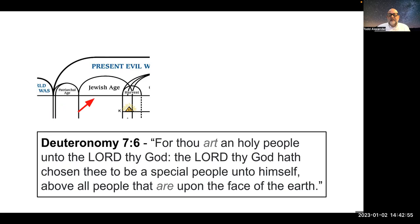The Jewish age was a unique time because it represented the opportunity for God to work only with the Jews. We find this in Deuteronomy chapter 7, verse 6, where God speaks to the nation of Israel: 'For thou art a holy people unto the Lord thy God. The Lord thy God hath chosen thee to be a special people unto himself, above all people that are upon the face of the earth.' That is why this is called the Jewish age — the Jews had a very special relationship with God, beginning with Abraham through the Abrahamic promise, continuing through Isaac, Jacob, and the 12 tribes of Israel.